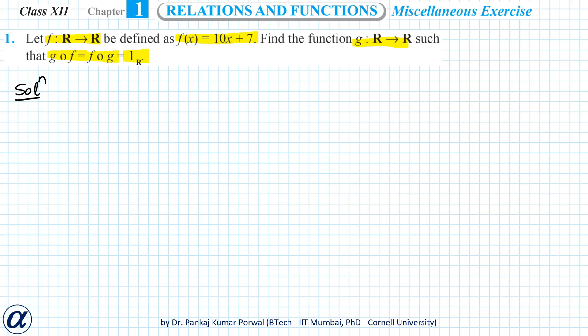So basically g will be the inverse of f. To find the inverse of f, we do f(x) equals 10x plus 7 equals y and we solve this for x. So this gives me 10x equals y minus 7. This gives me x equals y minus 7 by 10, and this function is nothing but the inverse of f in terms of y, and that equals g of y.